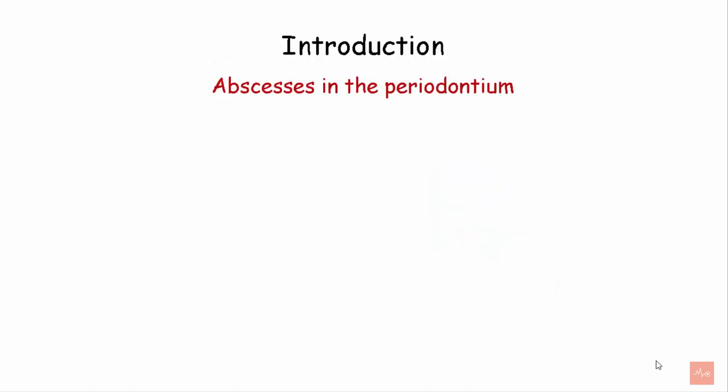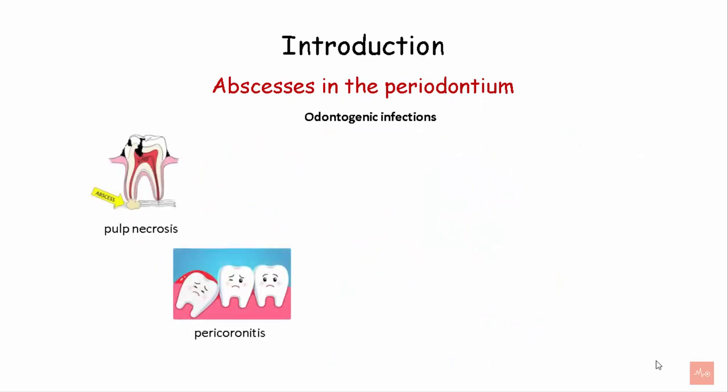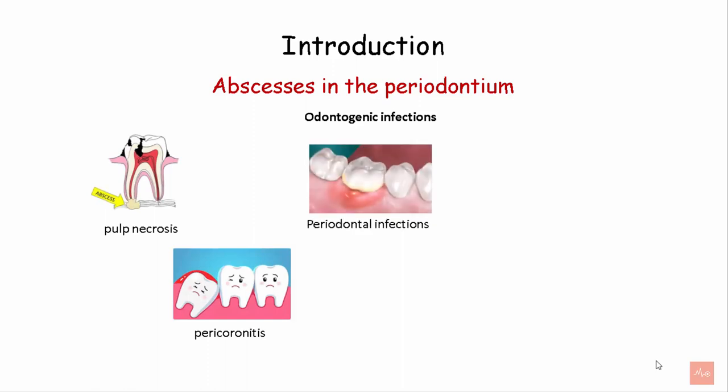Abscesses in the periodontium are basically odontogenic infections which arise due to pulp necrosis, pericoronitis, periodontal infections, trauma, or surgery.